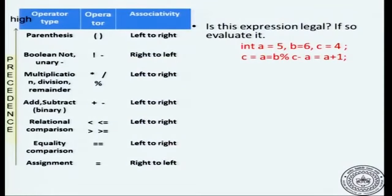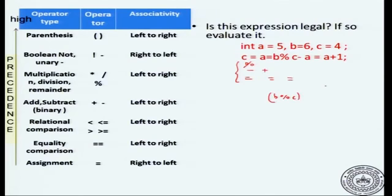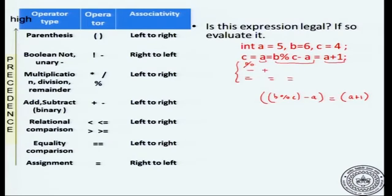Let us take this expression again and list out the operations. You have equal to twice, then you have the modulo operation which has the highest precedence, then you have minus, then again an equal to, and then a plus. The operation that needs to be done first is b modulo c, and then a plus 1 — this is by following precedence and associativity rules. For assignment statements, assignments are done right to left.